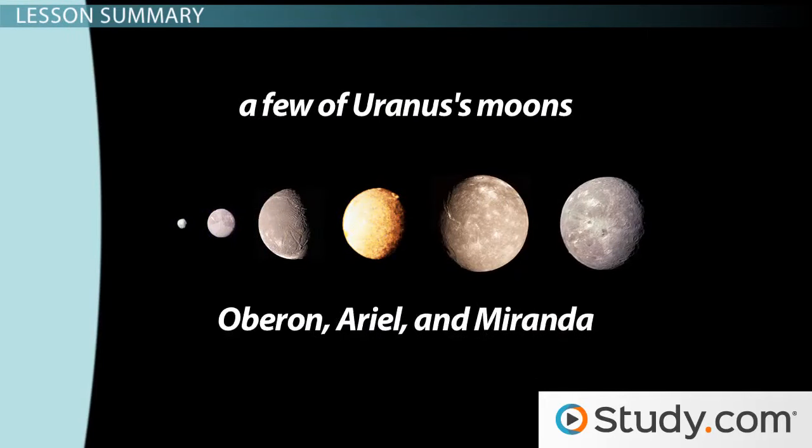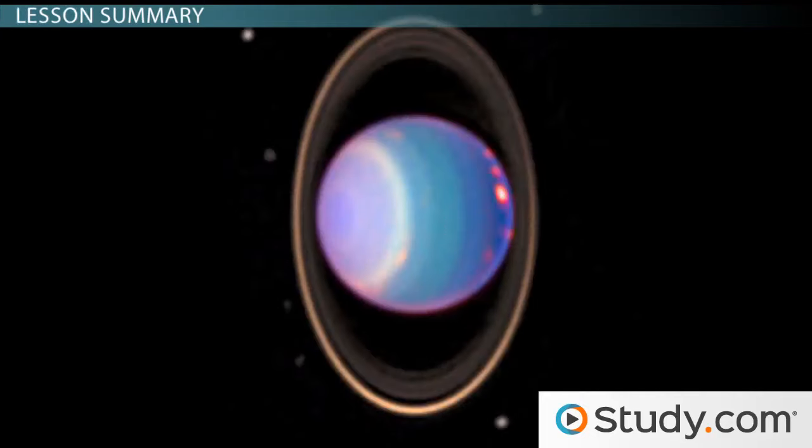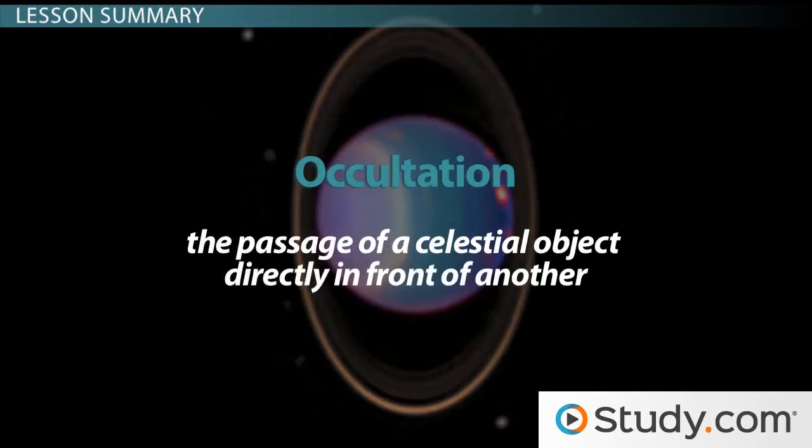Uranus has 27 moons, named for characters in Shakespeare's and Pope's plays, as set by the IAU, or International Astronomical Union. Uranus also has rings, discovered thanks to Occultation, the passage of a celestial object directly in front of another.